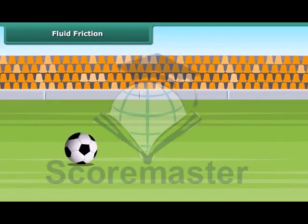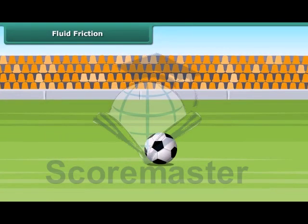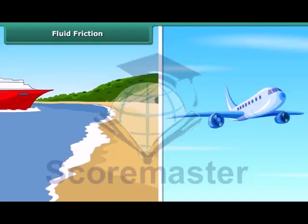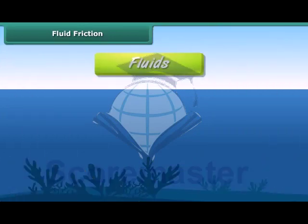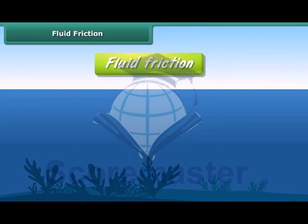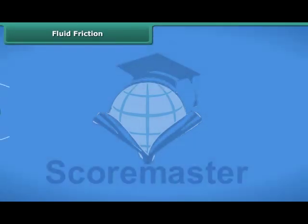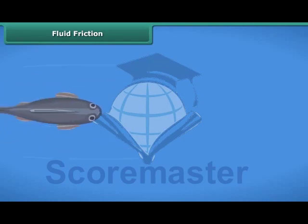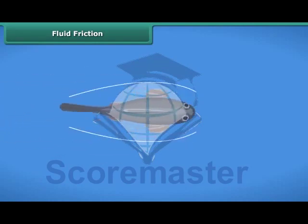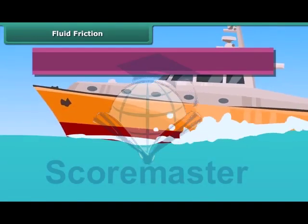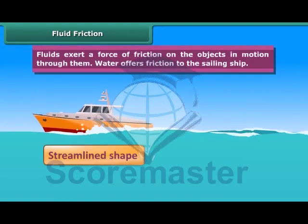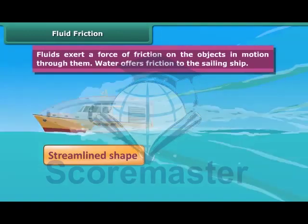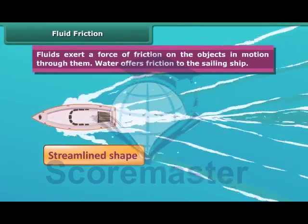It is not only the ground which offers force of friction on a body moving along its surface — even water and air exert frictional force. In science, the common name for gases and liquids is fluids. The streamlined shape of fish helps them reduce the force of friction between their body and the water through which they move. Boats and ships are narrow in front and sloping on sides — this is known as a streamlined shape, which reduces friction from the fluid medium.